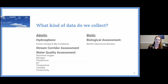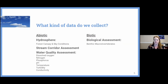With this project we collect lots of data, looking at both abiotic and biotic factors. For abiotic — the non-living factors — we look at forest canopy, sky conditions, stream corridor assessment, erosion, plant cover near the water, and water quality measurements including dissolved oxygen, nitrogen, phosphorus, pH, temperature, humidity, and conductivity. Then we also look at the biotic part — the animals living in the water — because certain types of benthic macro invertebrates tell us how healthy the stream is.